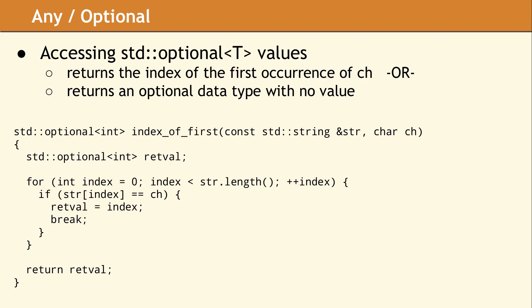For a simple type like int, this does not really matter. However, if the T is an expensive data type to construct, or does not have a default constructor, this property of std::optional is very useful.